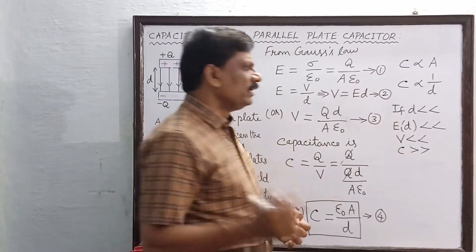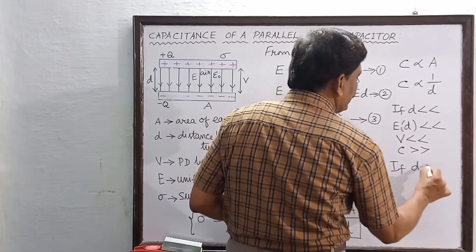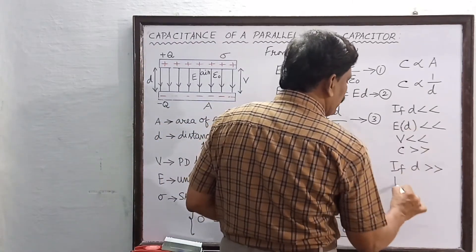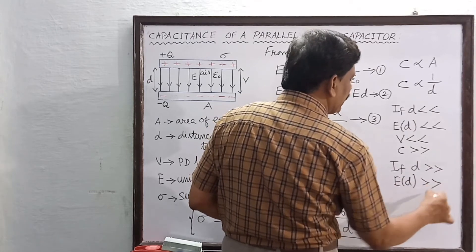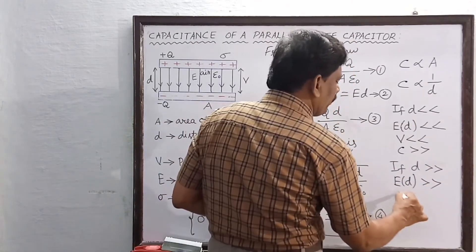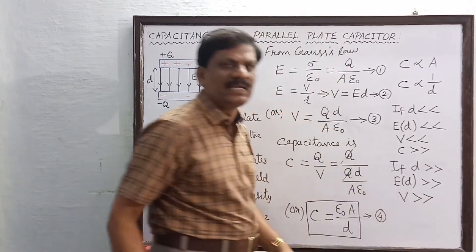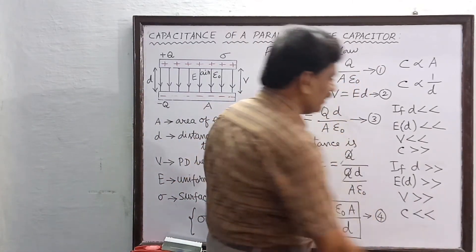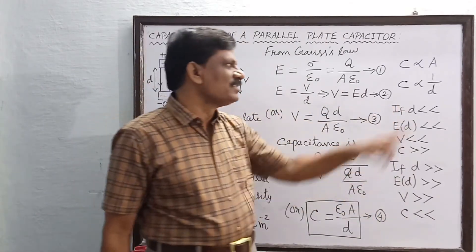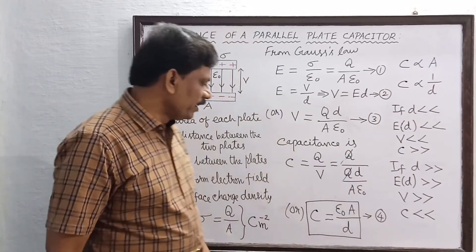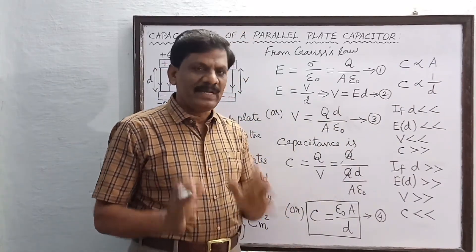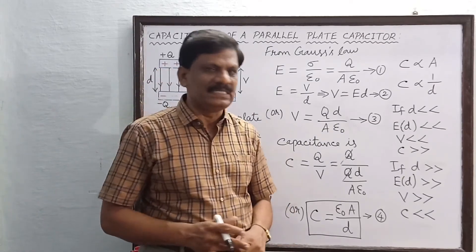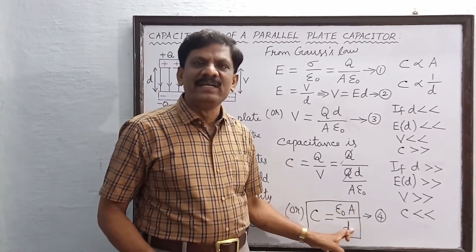Similarly, if the distance between the plates increases, for the same electric field E, the product E·d increases — meaning the potential difference in the denominator increases — and the capacitance naturally decreases. So remember: for a parallel plate capacitor without a dielectric (also called an air capacitor), C = ε₀A/d.